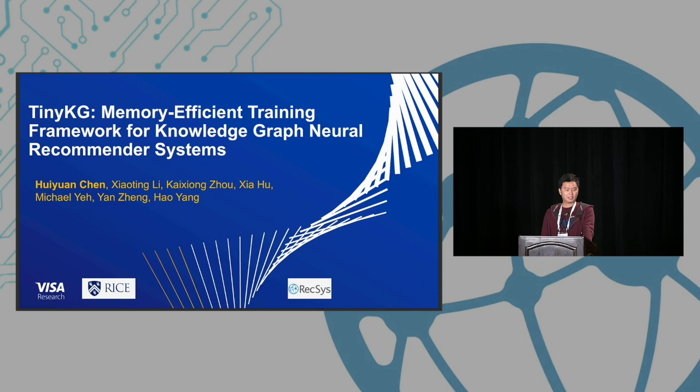Also the next acronym of course. This time it's Tiny KG, a memory efficient training framework for knowledge graph neural recommender systems. We have Huan Chen. Hi everyone, this is Huan Chen from Visa Research. Today I'm going to talk about Tiny KG, a framework for how to train knowledge graph neural networks with memory efficiency in the training time.